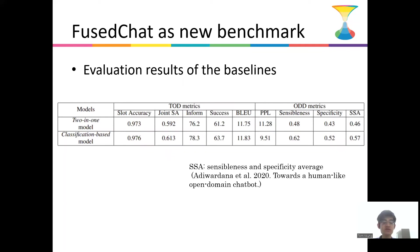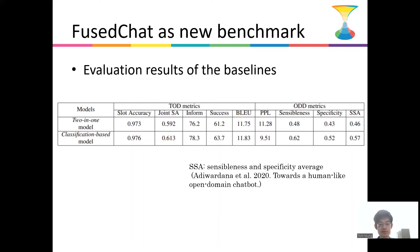One can use FusedChat to evaluate an inter-mode dialogue system using a combination of traditional TOD and ODD metrics. The results show that the classification-based model outperforms the unified model. This seems to suggest that handling the two dialogue modes separately using two models is better than combining them in a single model — but bear in mind that this is just a baseline attempt at solving this problem.